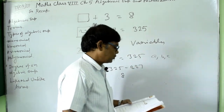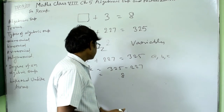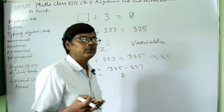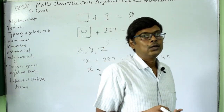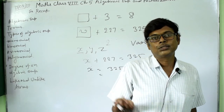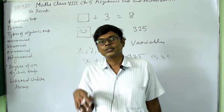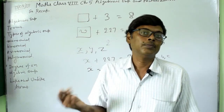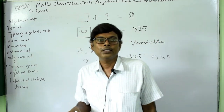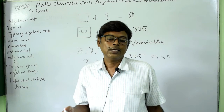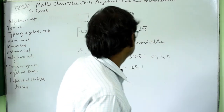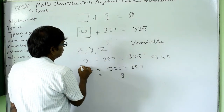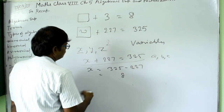There are also constants — all numbers like 1, 2, 3, 4, 5, 6 are constants. There are also literal constants like a, b, c, d. By custom, for variables we generally use x, y, z, u, v, w, etc., and for constants we use a, b, c, d, e, etc.